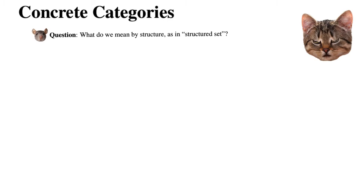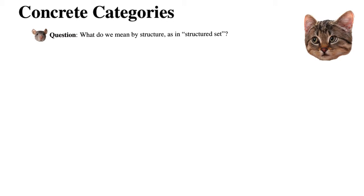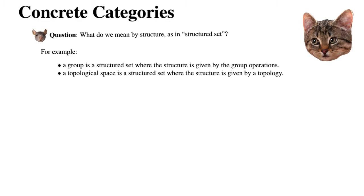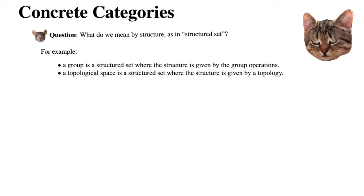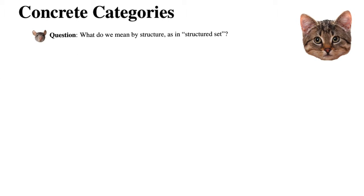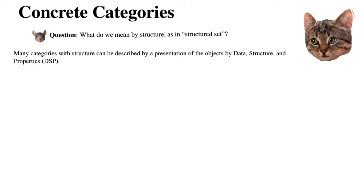We are going to discuss concrete categories. The motivating question is: what do we mean by structure, as in a structured set? For example, a group is a structured set where the structure is given by the group operations. A topological space is a structured set where the structure is given by the topology. Many categories with structure can be described by a presentation of the objects by data, structure, and properties — a DSP.